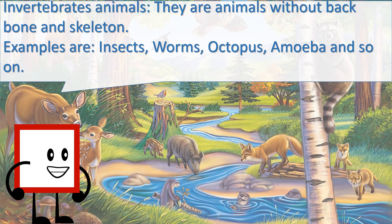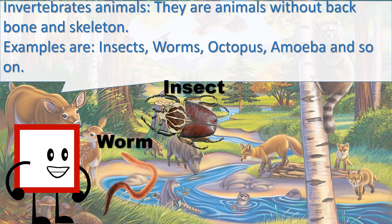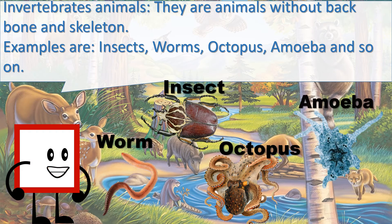Invertebrate animals are animals without backbone and skeleton. Examples are insects, worms, octopus, amoeba and so on.